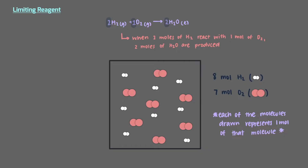But we don't have 2 moles of hydrogen and 1 mole of oxygen — the actual amounts in the container are different. So exactly how much water will we be able to produce from the quantities in the container?